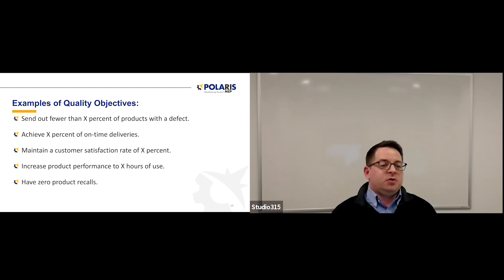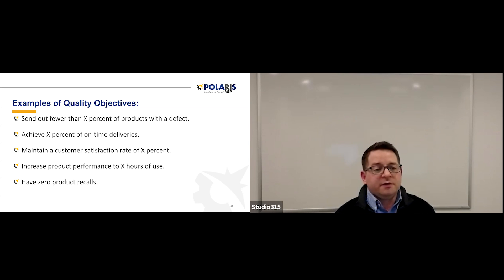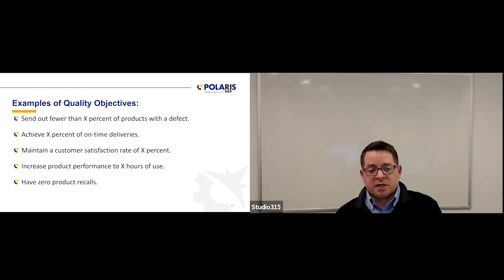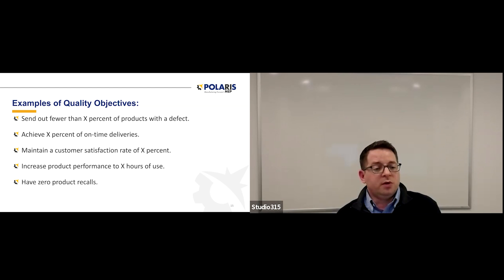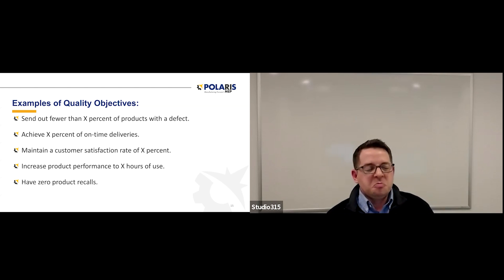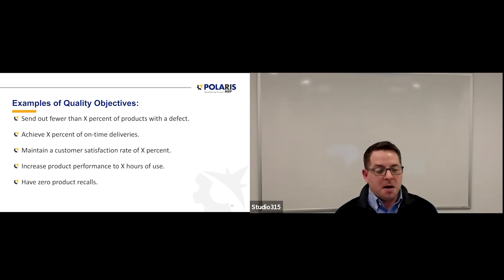We talked about management objectives, quality objectives, safety, environmental, etc. Here are some examples of quality objectives — some pretty popular ones that you tend to see. We're going to send out fewer than X percent of products with a defect. We will achieve X percent of on-time deliveries. We will maintain a customer satisfaction rate of X percent. We want to increase product performance to X hours of use, or have zero product recalls. These are all really good examples of quality objectives.